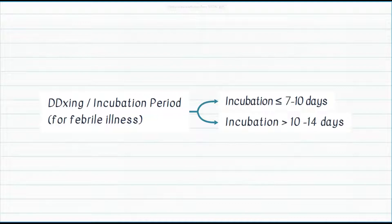Among hemorrhagic fevers, examples include Hanta fever, Lassa, and Ebola. Arboviral diseases include chikungunya, dengue, Zika virus, and arboviral encephalitis such as Japanese encephalitis and West Nile virus. Rickettsial infections include Rocky Mountain spotted fever, ehrlichiosis, different types of typhus, typhoidal fevers, relapsing fever, Q fever, and Lyme disease. Zoonotic and other diseases within ten to fourteen days include plague, tularemia, anthrax, and Bartonellosis.